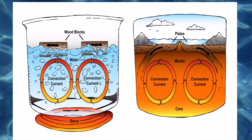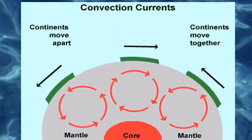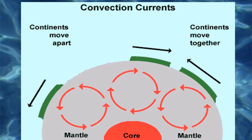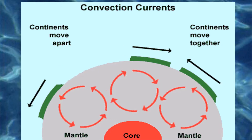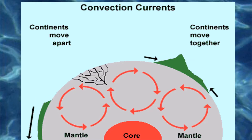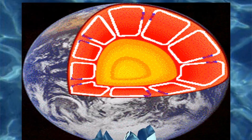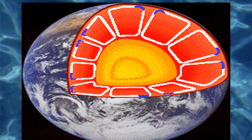Tectonic plates rest on the asthenosphere, a layer of soft, hot rock. Rock in this layer and in the mantle just below it moves by convection — energy transfer by the movement of a material. You have seen convection if you have ever boiled a pot of water. The water at the bottom heats up, becomes less dense, and rises. At the surface, it cools, becomes denser, and sinks, only to be heated and rise again. The rock in the asthenosphere acts in a similar way.